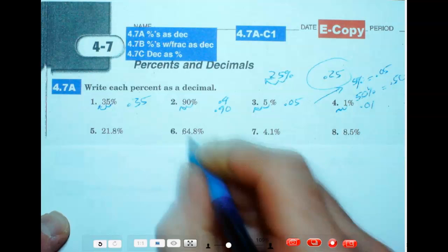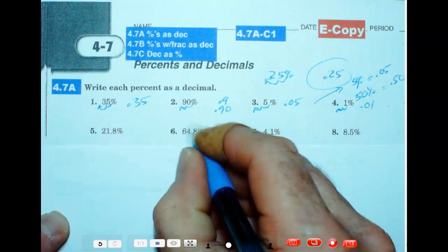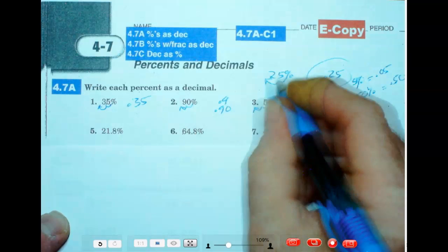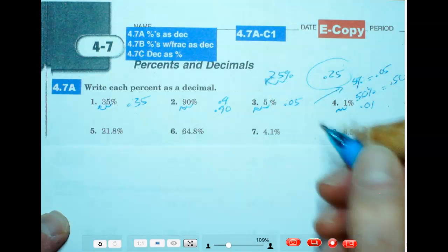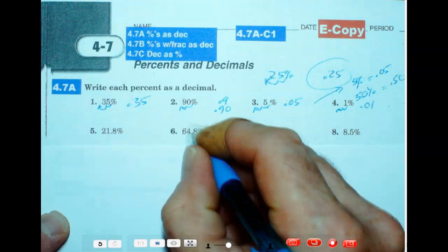These ones here are a little bit tricky. Just do the same thing. Again, 25 percent. We divide by 100. We move that decimal two places to the left. We'll do the same thing here. Just start where the decimal's at.